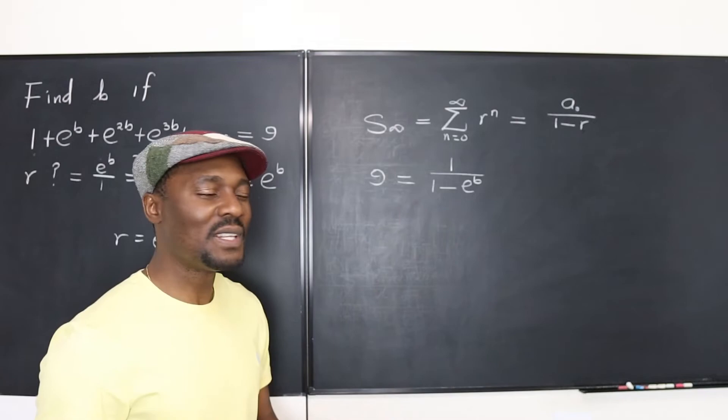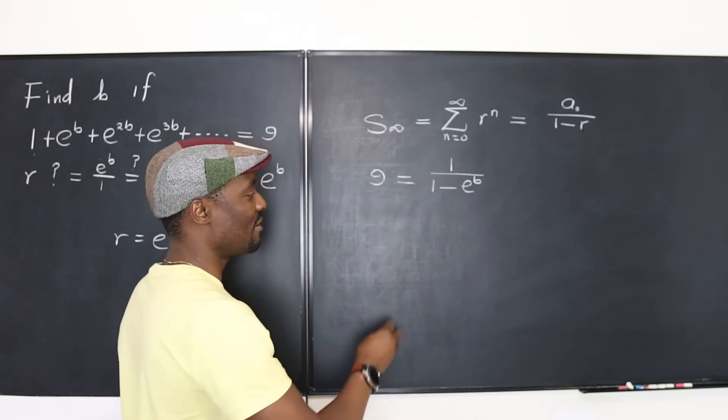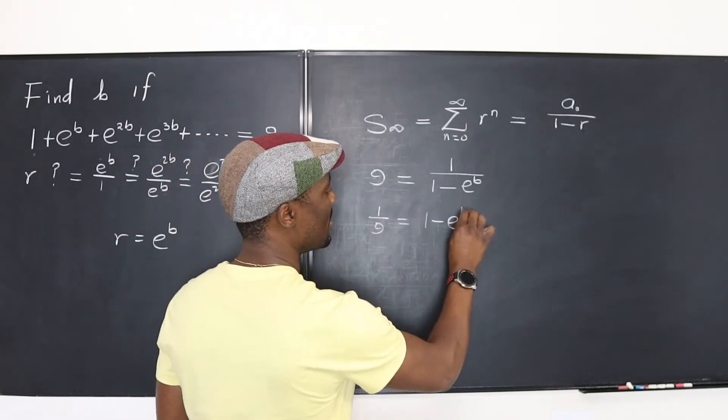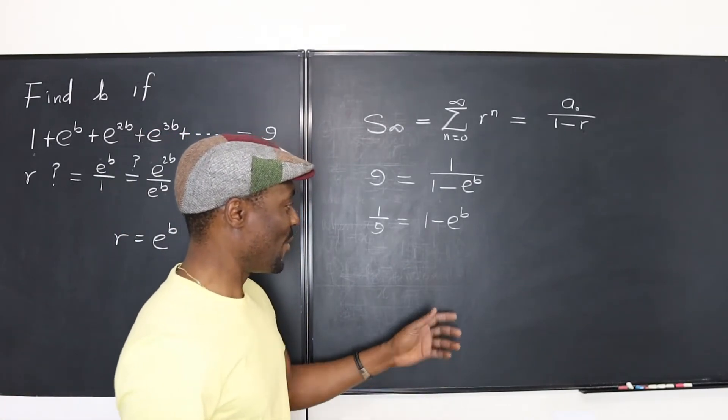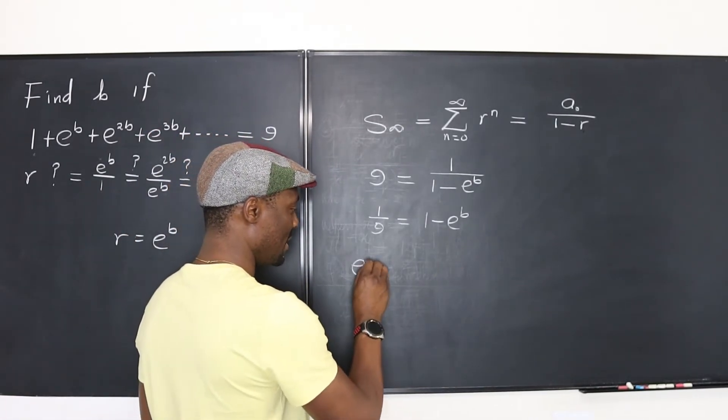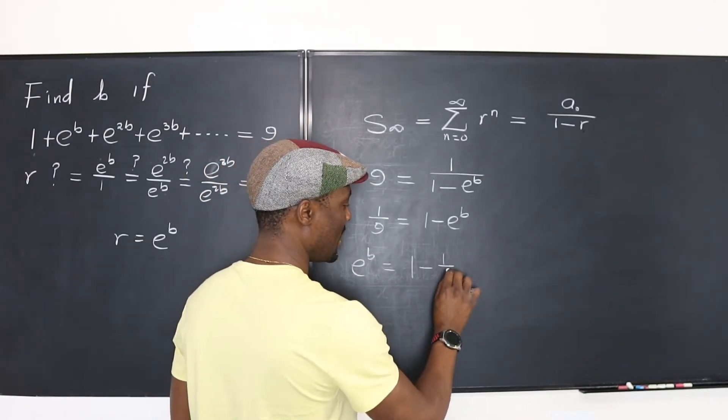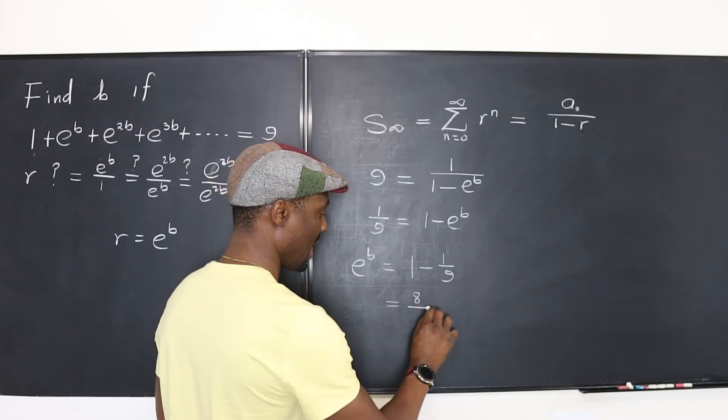So, let's do all the math. I can just move this one over here. I can say 1 over 9 equals 1 minus e to the b. That is true. Okay, now, what do I need to get? I need to get e to the b.